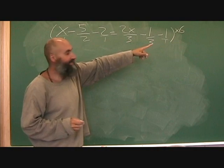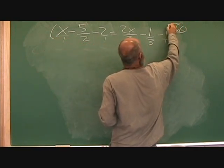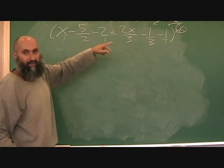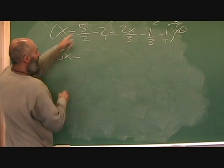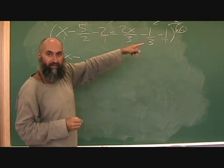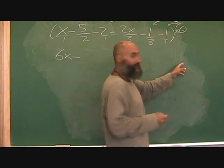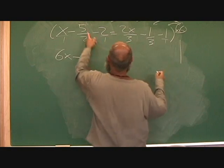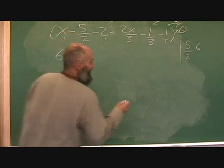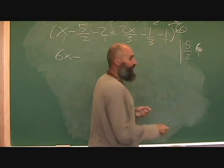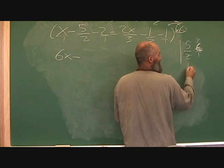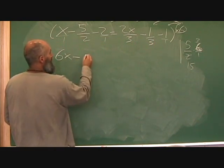When you multiply this whole equation by six, six multiplies every term. x over one times six is just going to be six x. Five over two times six: two reduces the six down to three, so it's five times three, which is fifteen. Let's do this on the side. Five over two times six - two kills six down to three - so it's just going to be five times three, which is fifteen.